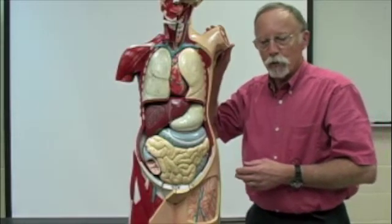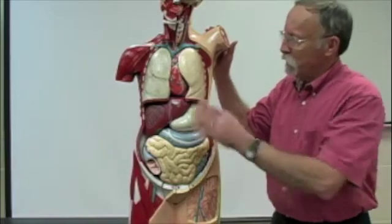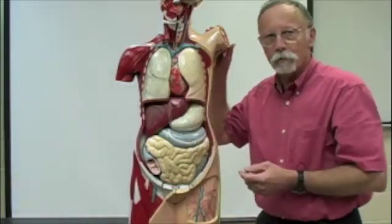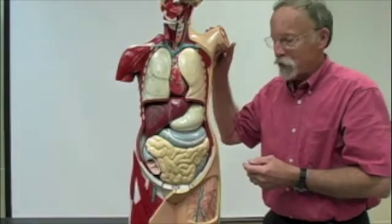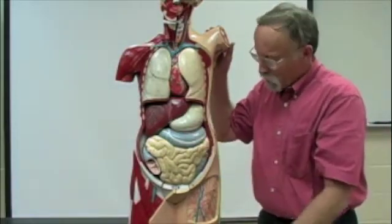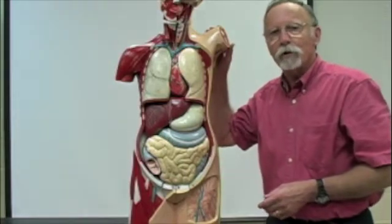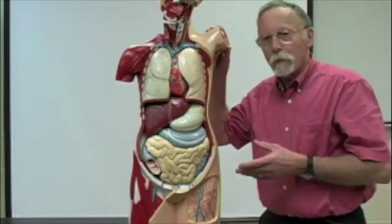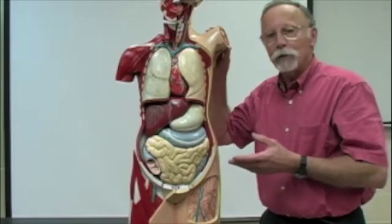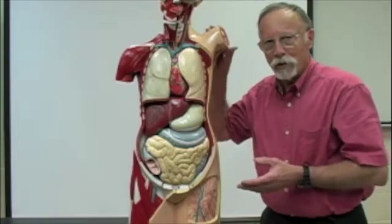Organ systems, in turn, are divided into organs. The lungs, part of the respiratory system. The heart, part of the cardiovascular system. The liver, the stomach, the large intestine, the small intestine — part of the digestive system. Organs, in turn, are divided into tissues, and we'll look at tissues in just a moment.